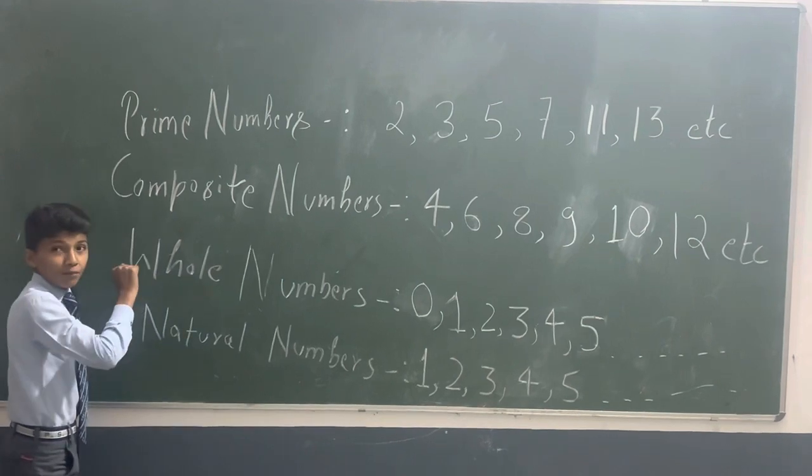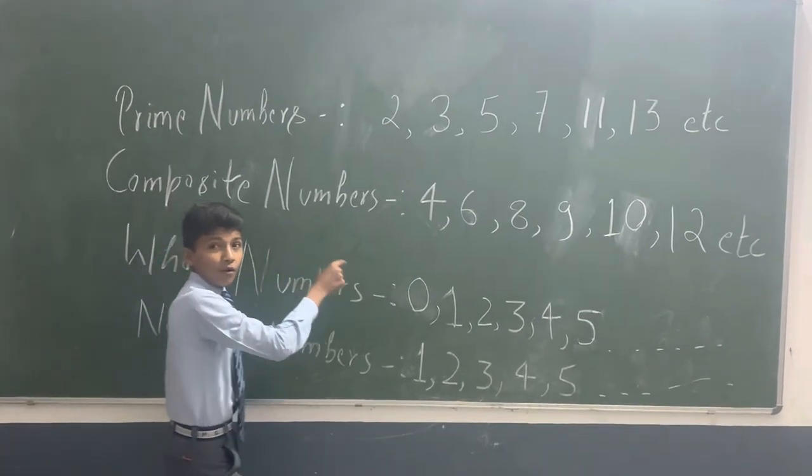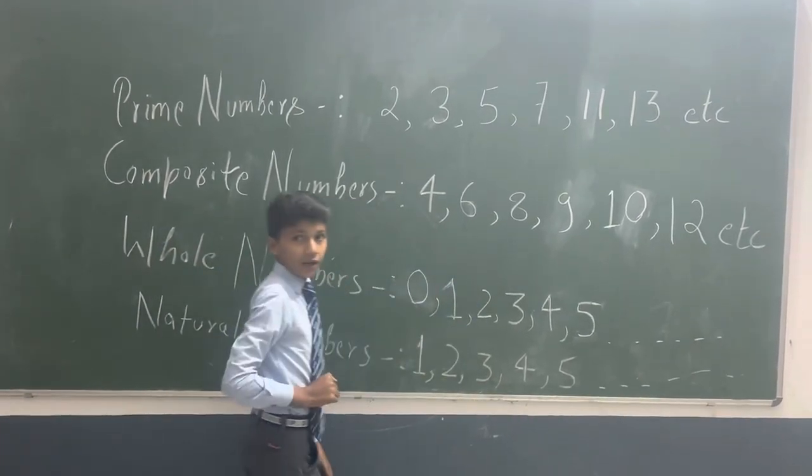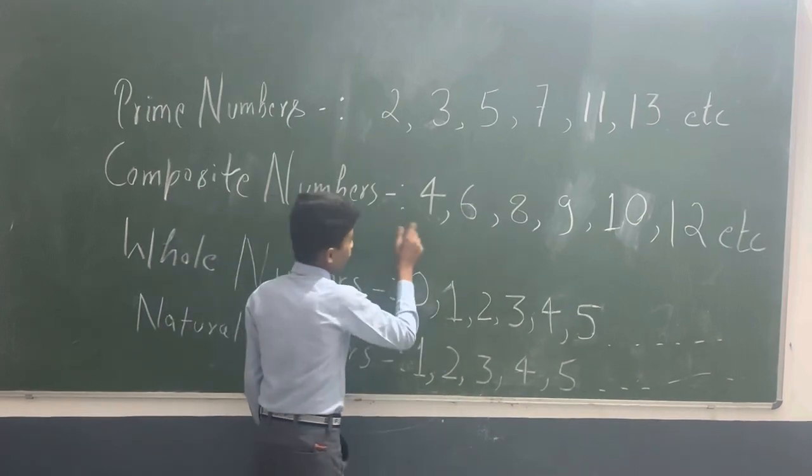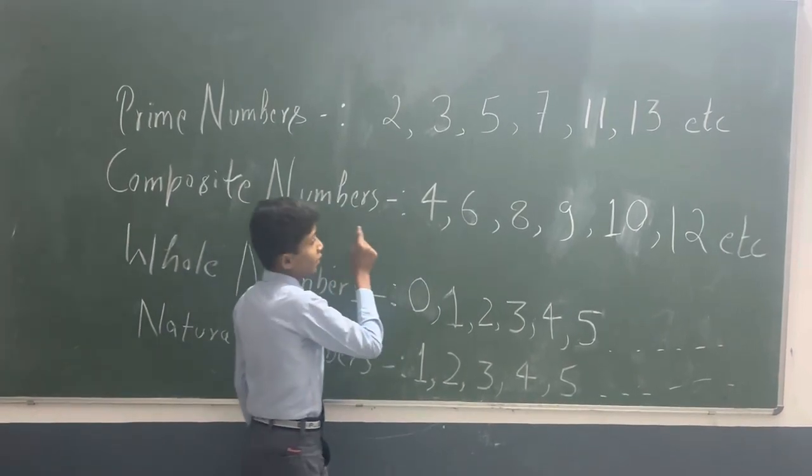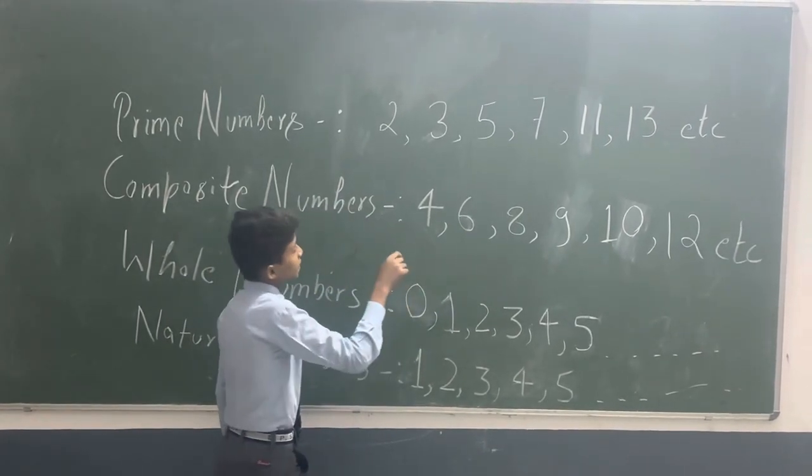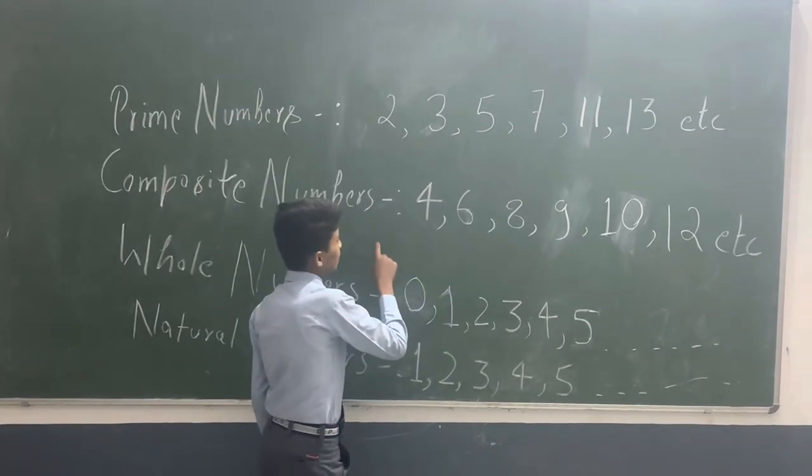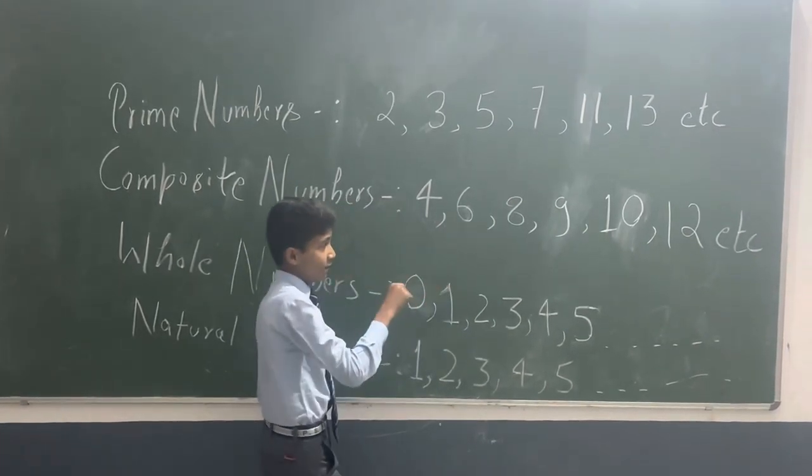After that, what is composite number? The number which have more than two factors are called composite numbers. For example, 4 is divisible by 1, 2 or itself. 6 is divisible by 1, 2, 3 or itself, etc.